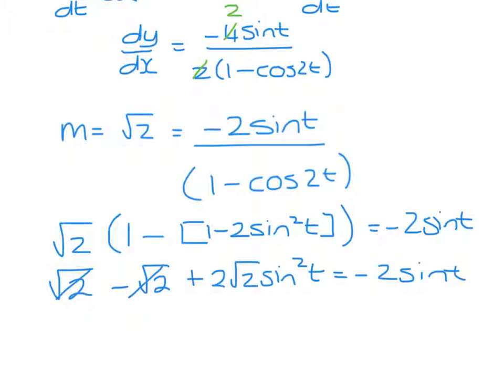The root 2 terms cancel, and if we bring everything over to the left, we have 2 root 2 sine squared t plus 2 sine t equals 0.